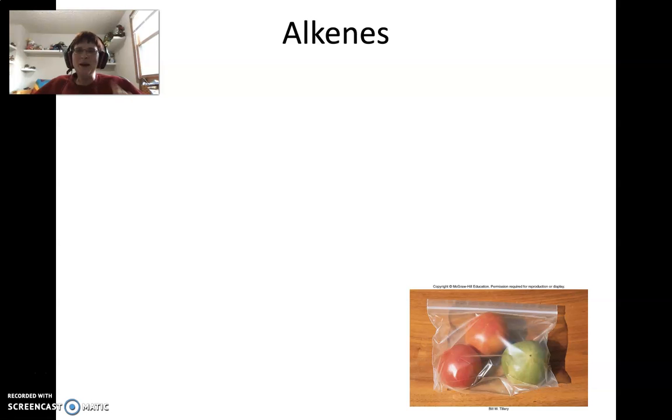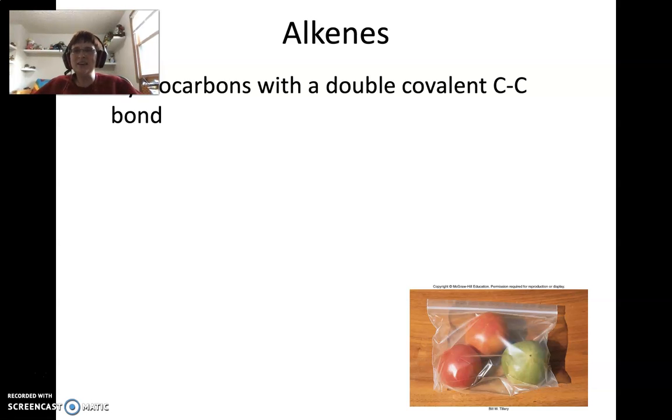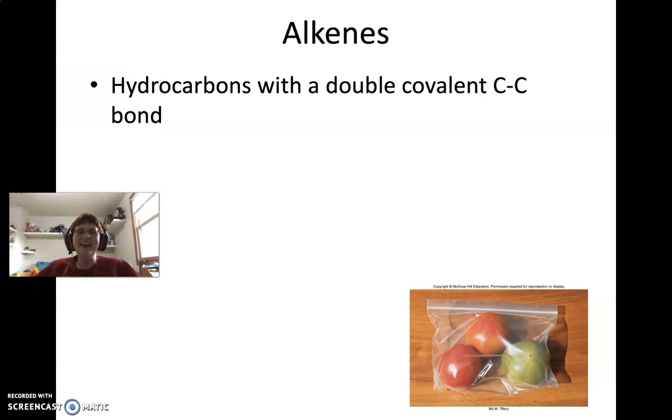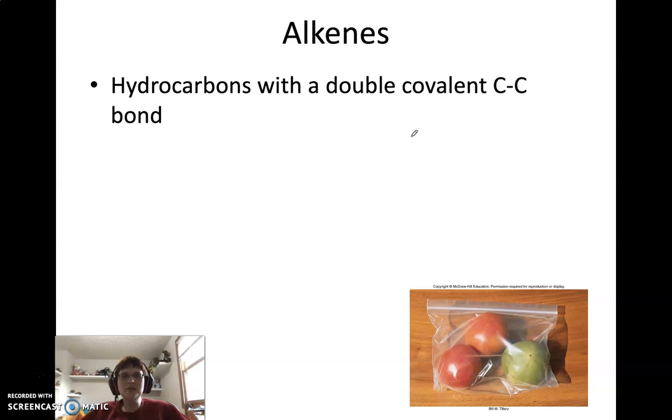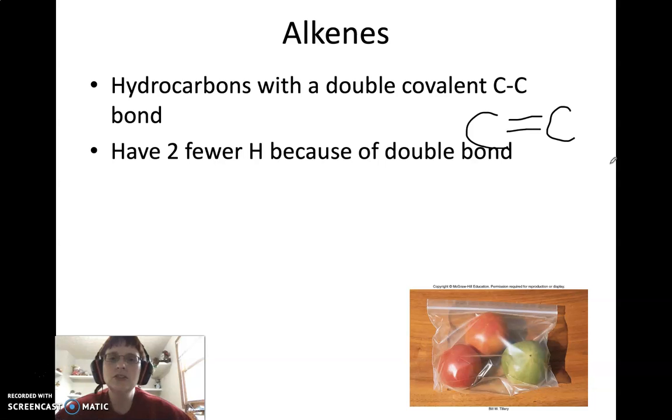I'm getting already ahead of myself because this group, the alkanes - yeah, I know, they named them with very similar names. Alkenes are hydrocarbons with a double covalent bond. So these are those hydrocarbons where you've got a carbon double bonded to a carbon. And so what that means is because of that double bond, you're going to have two fewer hydrogens in the compound. So you can identify an alkene by its formula.